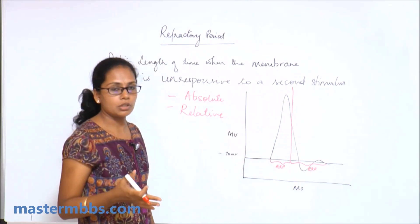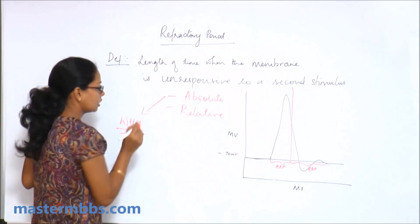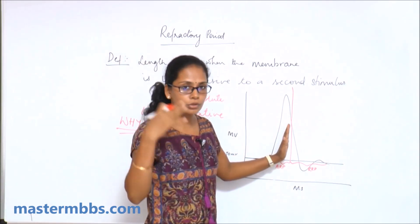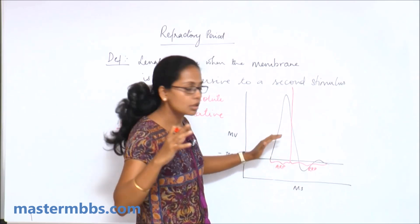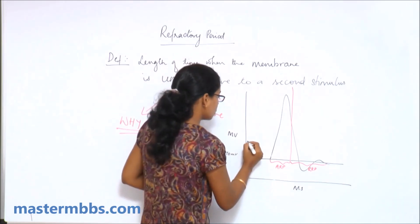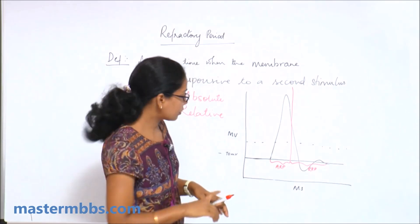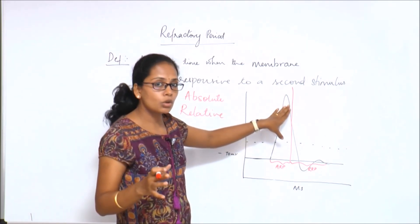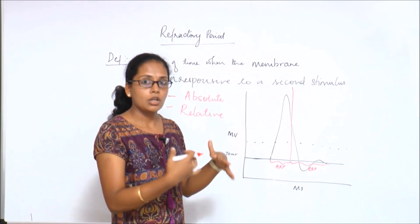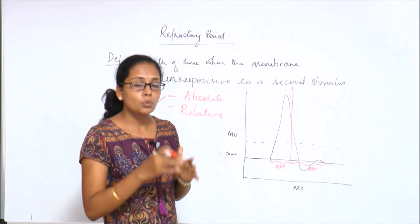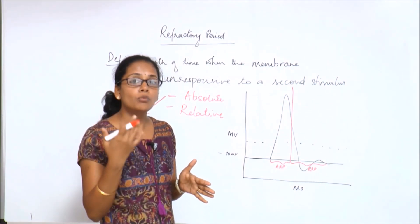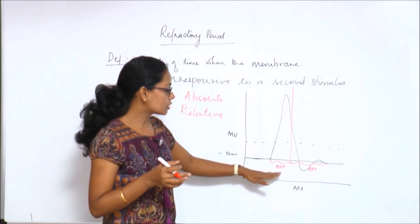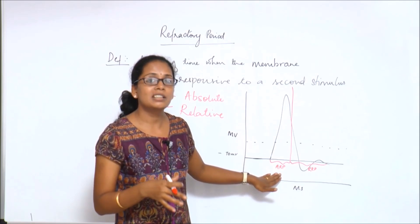During the absolute refractory period, even if the stimulus is very strong, the nerve does not respond. The reason relates to the action potential mechanism: the voltage-gated sodium channels open at threshold going from the resting state to the activation state, allowing sodium ions to enter. After that, the inactivation gates close, putting the channels in an inactivated state. While in this inactivated state, it is very difficult to reopen those channels until they return to the resting state. During the entire absolute refractory period, the sodium channels remain in their inactivated state.